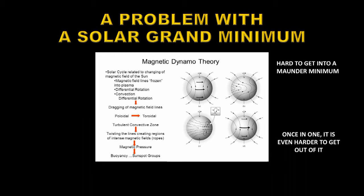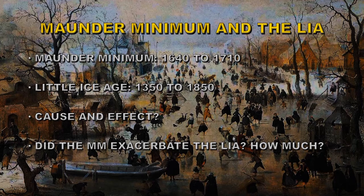The problem with a Maunder Minimum is: how do you get rid of this magnetic flux so you don't get a solar cycle? The Sun is still differentially rotating — that can't stop — so you'd have to somehow have no magnetic field, which is very difficult to explain with this model. Equally, once you've got rid of all that magnetic field so no sunspots are coming, there's no reversal and no buildup of flux, so you can't get out of it again. You'd end up with an effectively magnetically dead star. All of this has yet to be explained.